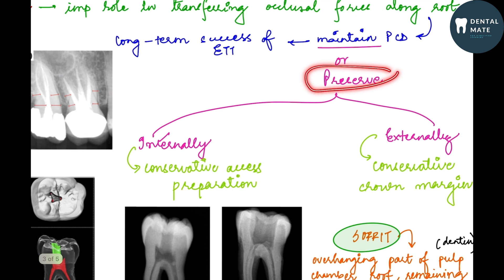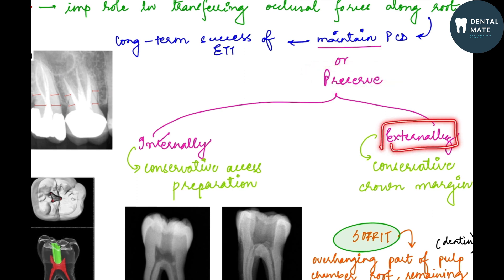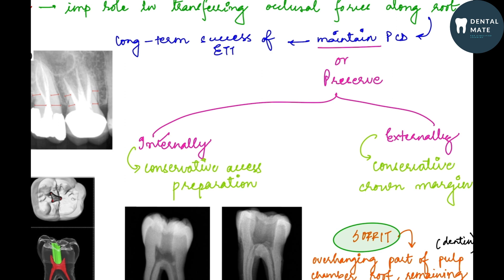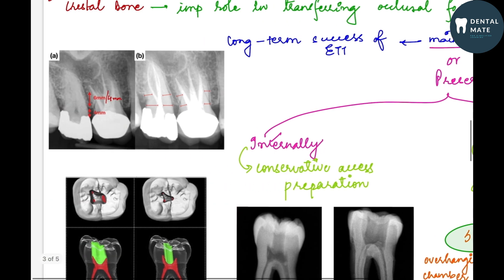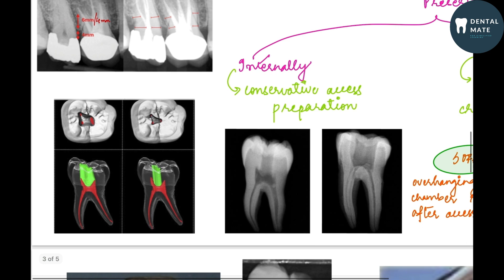There are two ways in which we can preserve the pericervical dentine — either externally or internally. Externally, when we are doing a crown preparation, we have to give a conservative crown margin. Internally, while treating a tooth for endodontic treatment, we can go for a conservative access cavity preparation.